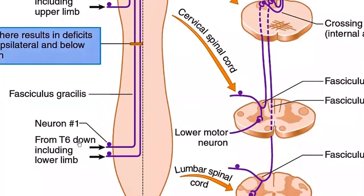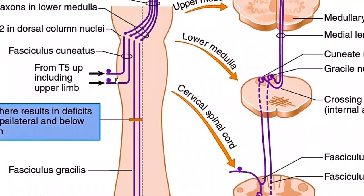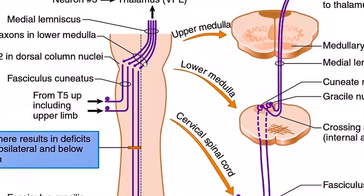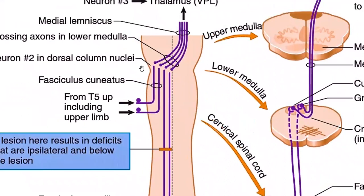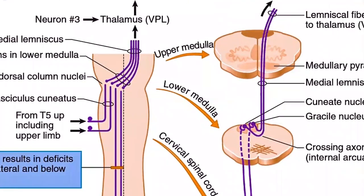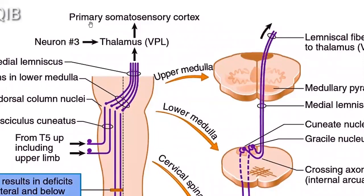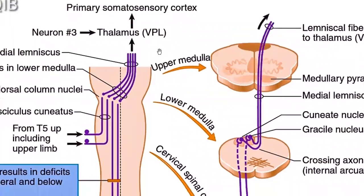In this diagram, fasciculus gracilis and fasciculus cuneatus are shown. Fasciculus gracilis runs from T6 downward, including the lower limb. Both fasciculus gracilis and cuneatus run upwards from T5 and above, including fasciculus cuneatus. All the axons cross in the lower medulla — this is the sensory decussation — forming the medial lemniscus by both tracts. They go to the thalamus as the third-order neuron, and then to the primary somatosensory cortex.